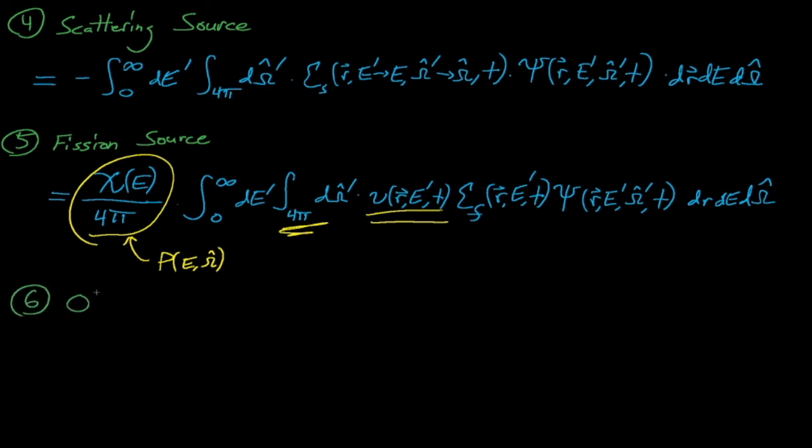Lastly, we may have a source of neutrons in our system that is completely independent of the system's neutron distribution and flux. An example of this could be a californium neutron source that's emitting neutrons by decay that's sitting inside of a reactor. Another source could be a beam of neutrons that is incident on some lump of fissile material.